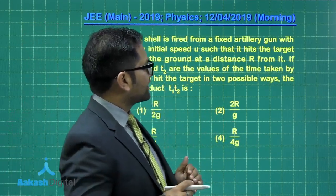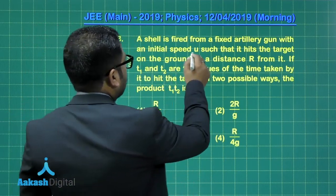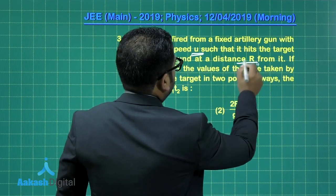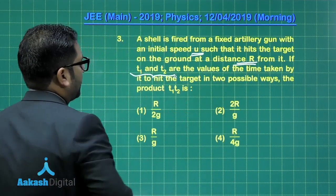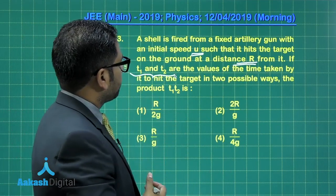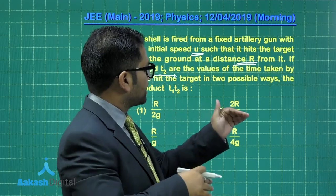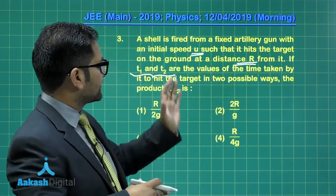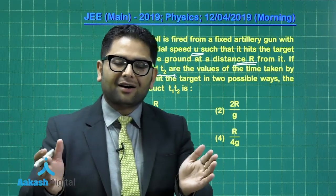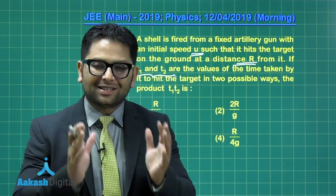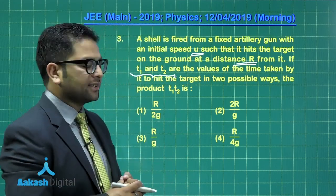It said, a shell is fired from a fixed artillery gun with an initial speed u, and it has the range which is r. Now it says, for t1 and t2, as the time of flight, there is one range. Of course, that has been said in a bit deviated way, but yes, the sense is that. That means, for that single range r, there are two time of flights, t1 and t2. And we need to find the product of that t1 and t2.